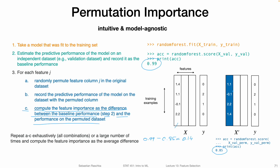We only considered shuffling the column one time, but in practice it's recommended to repeat this several times. If we have a small dataset, we could exhaustively consider all possible arrangements. In practice, it's more feasible to repeat this a large number of times — for example, 50 times with different random seeds. We then compute the feature importance as the average difference across all 50 shuffles.